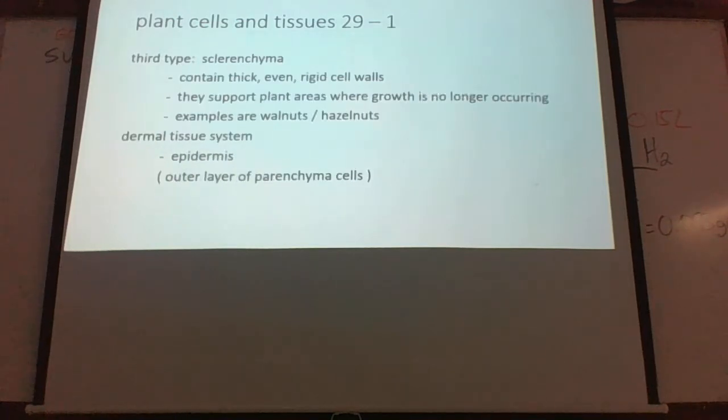Finally, the last part is sclerenchyma. With that, keep your S's together as a type of secondary tissue. That would be the best way to keep these separate: parenchyma deals with photosynthesis, colenchyma is what you find in the stem, and finally sclerenchyma is a type of secondary tissue. It also functions in support. A good place you would find that is probably in the stems as well, because that's where the support for these plants would be needed.